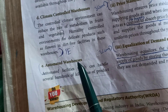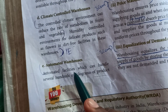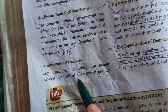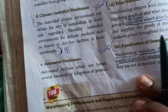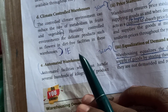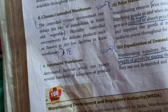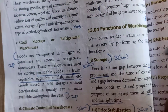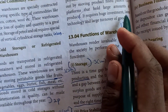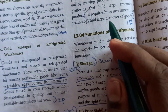Next, automated warehouses. These are automated facilities which can handle several hundred kilograms of products at a time. It requires huge investment, latest technology, and a large turnover of goods.